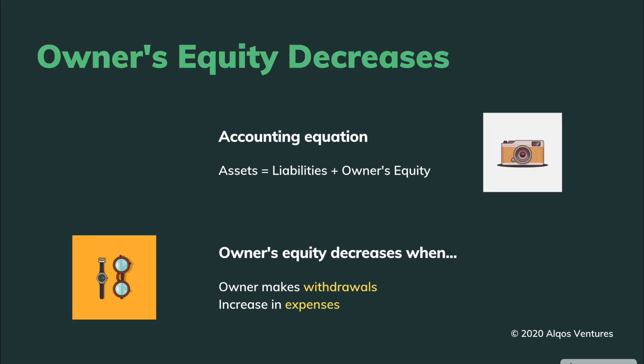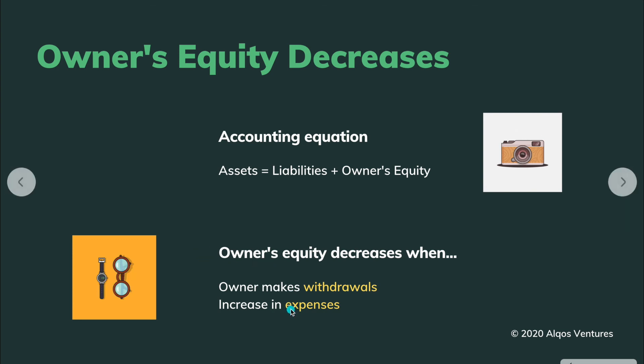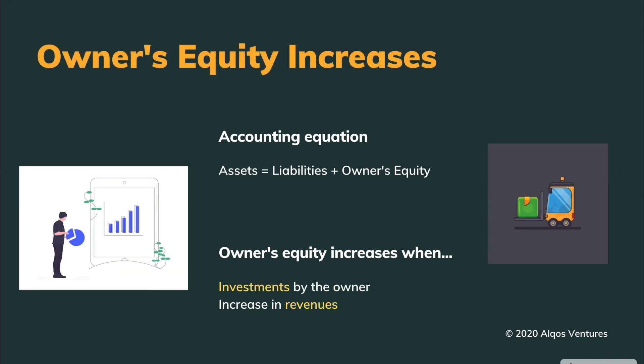So it's the exact opposite actually. You'll see a decrease in owner's equity when the business is losing money, and you'll see an increase in owner's equity when there's either an investment or there's an increase in revenue.